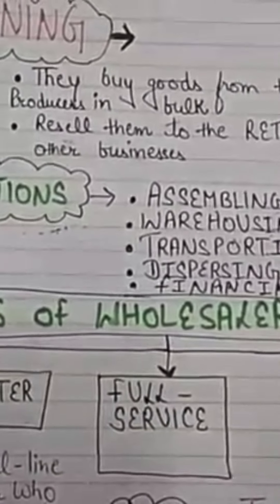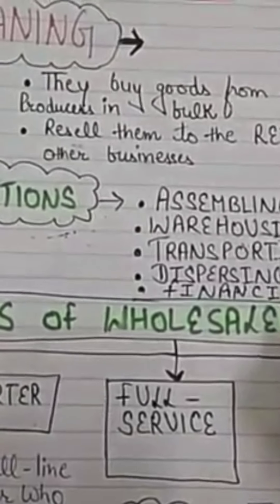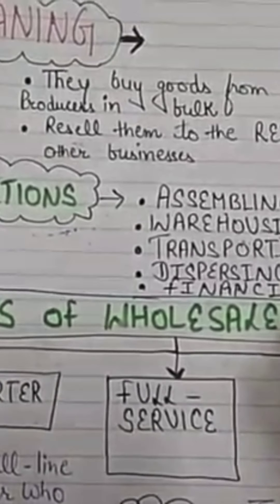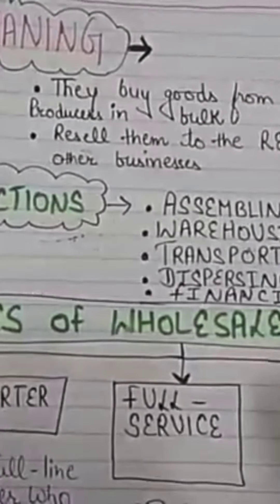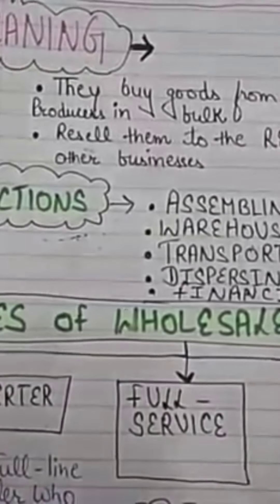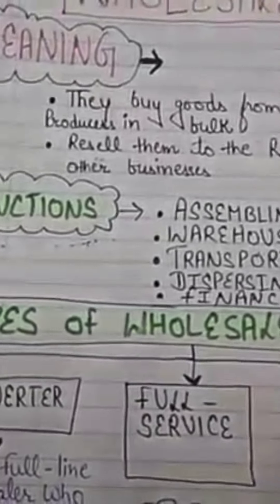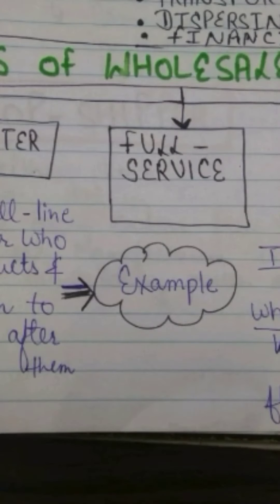The functions of a wholesaler are: first, assembling — they buy in bulk from manufacturers or producers; second, warehousing — they store the goods; third, transportation — they move goods from one place to another; fourth, dispersing and selling — they sell in small lots to retailers; and last, financing — they also provide credit facilities.